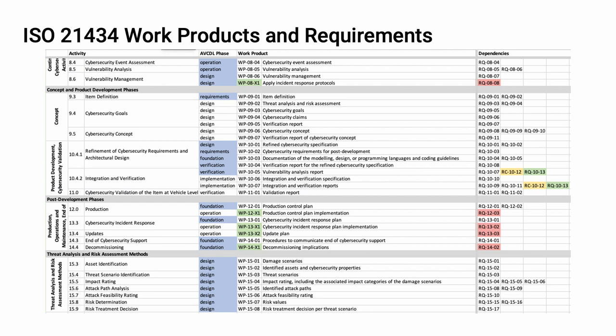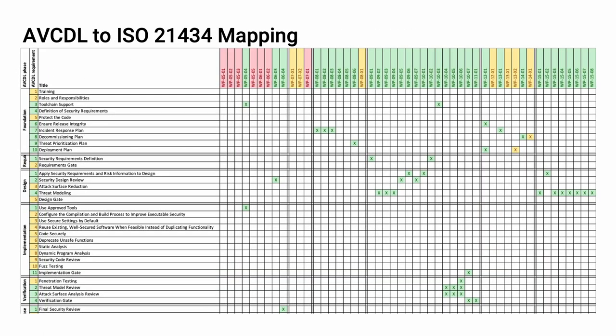As mentioned earlier, ISO 21434 serves as the technical underpinning for R155. Here we see a portion of the ISO 21434 work products showing their dependent requirements. These work products and their dependent requirements have a much higher granularity when compared to those of R155 itself, as is to be expected from a technical specification. The AV-CDL provides a way to satisfy both R155 and ISO 21434. Here's a portion of the mapping between the AV-CDL phase requirements and the ISO 21434 work products. As a lifecycle, the AV-CDL more readily integrates with an established development process, and it's written in a manner which is far more accessible to those who don't spend their time reading ISO and UNECE documents.